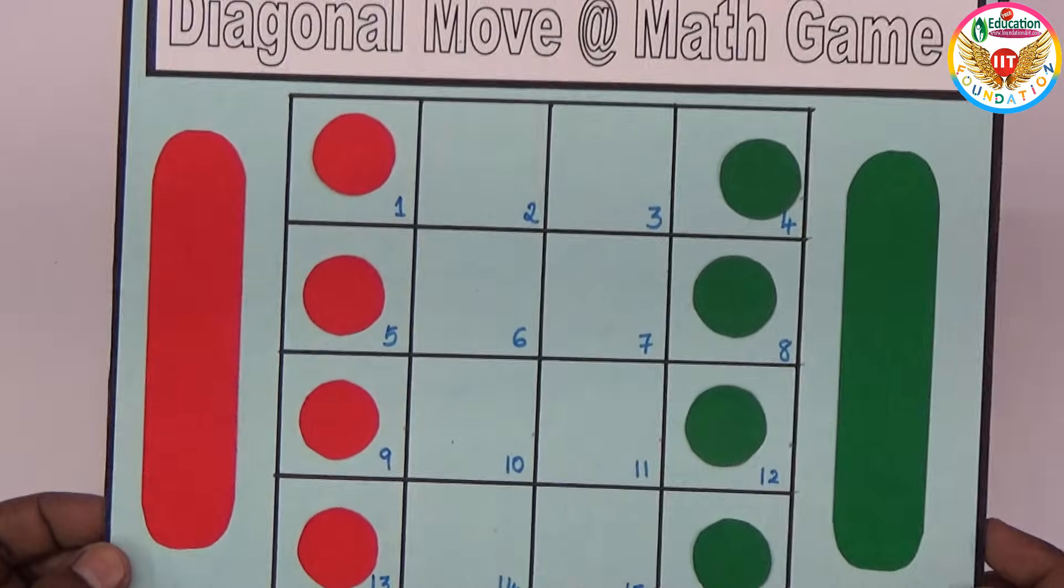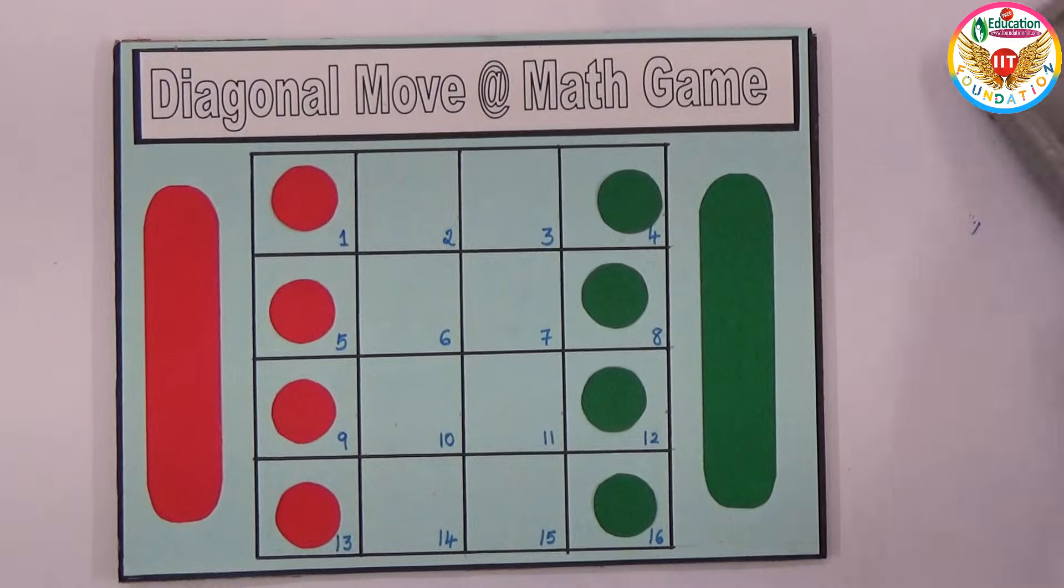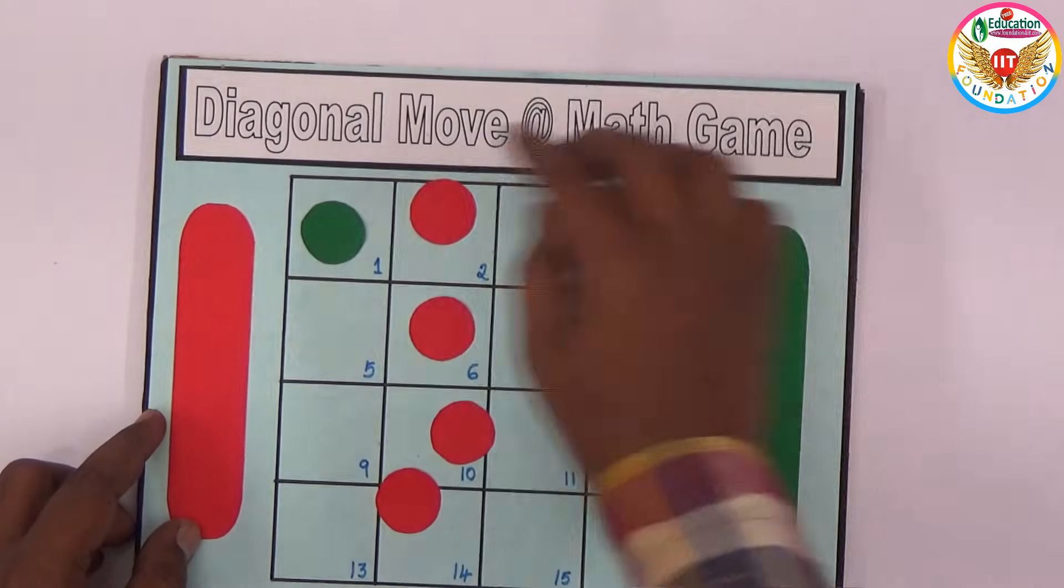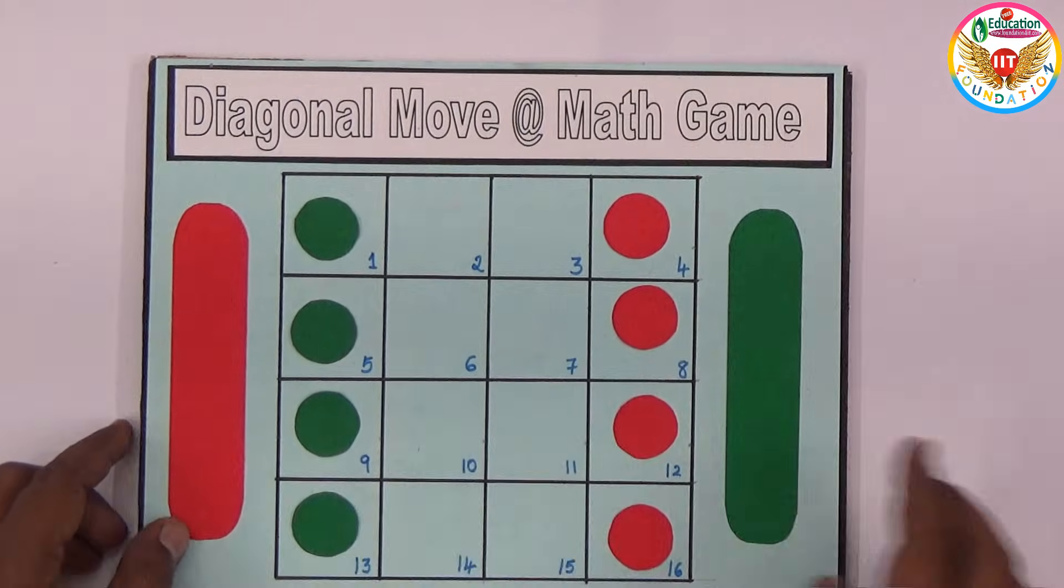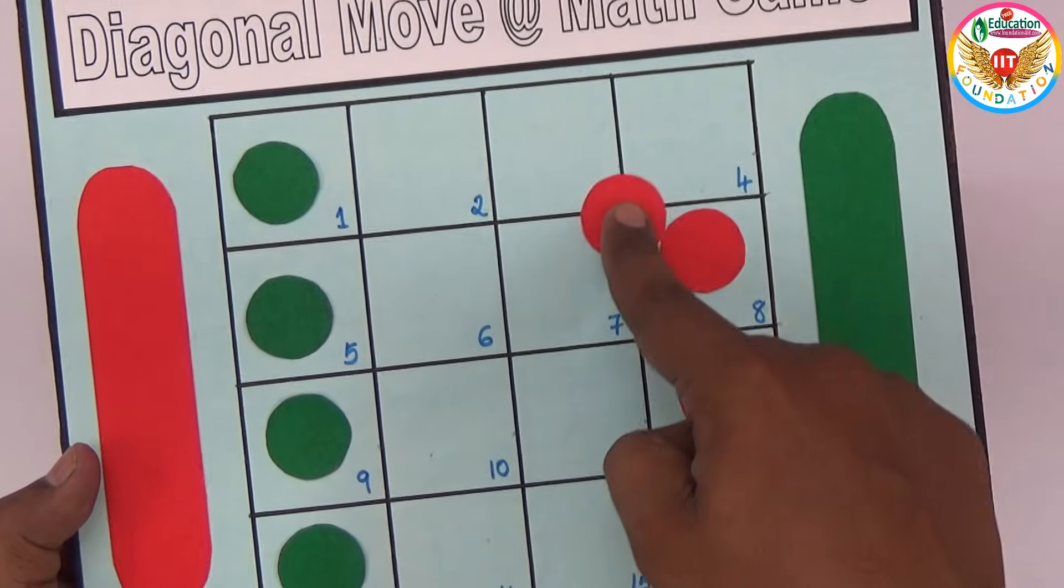I took 21 steps to interchange, but the condition is within 14 steps you need to interchange red to green and green to red. The main question is you should only go diagonal moves.